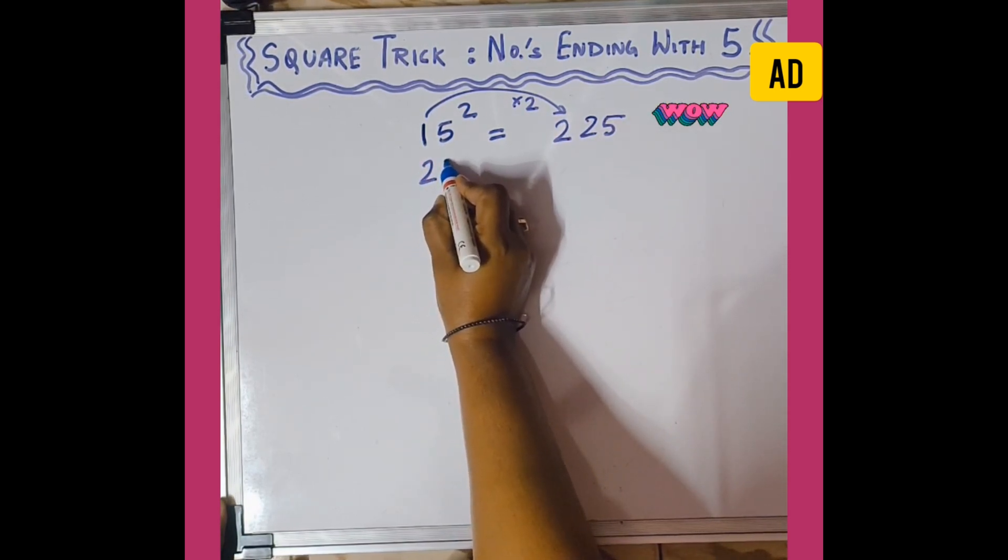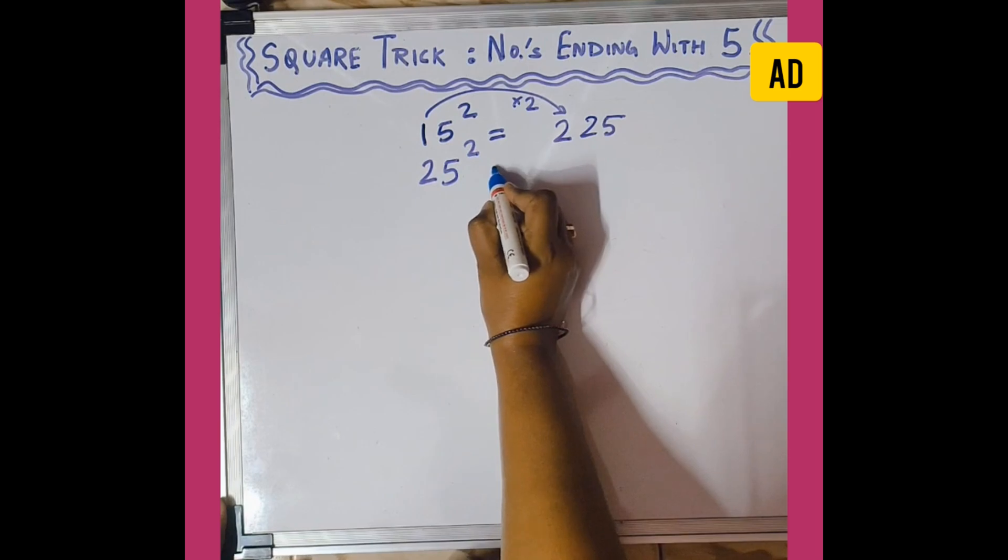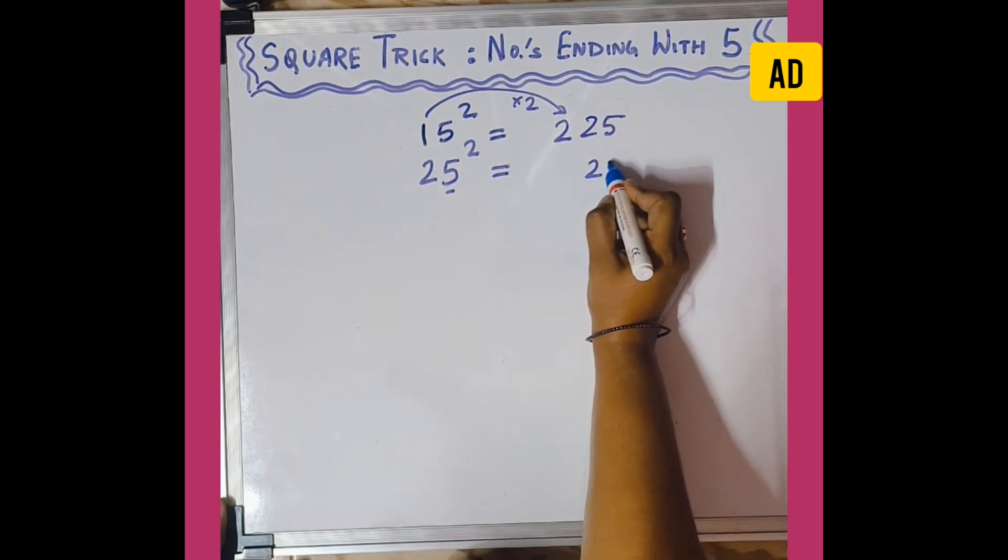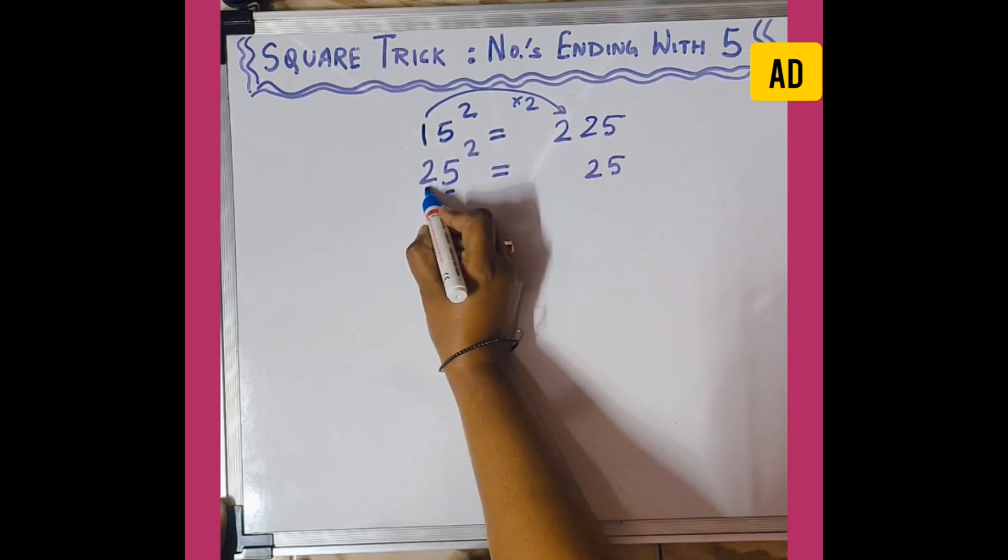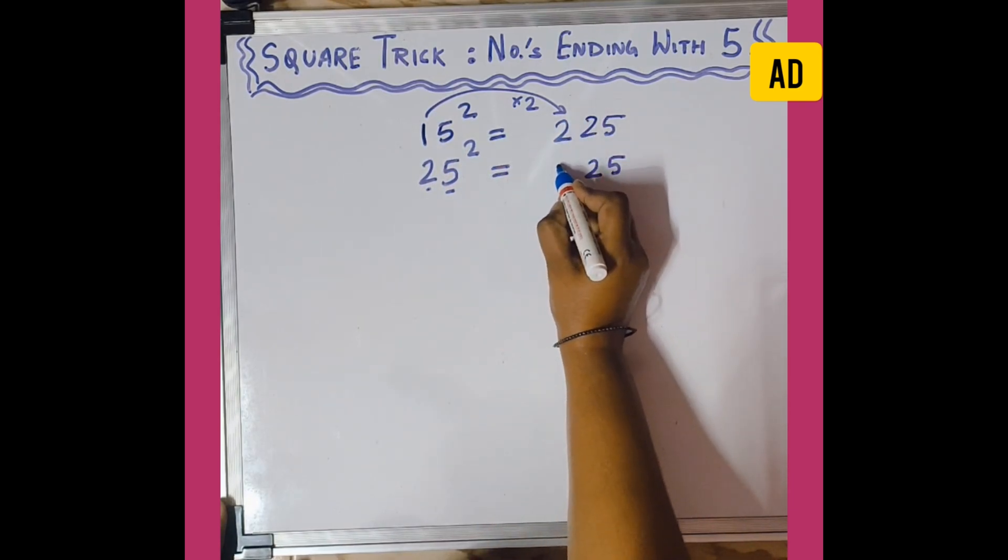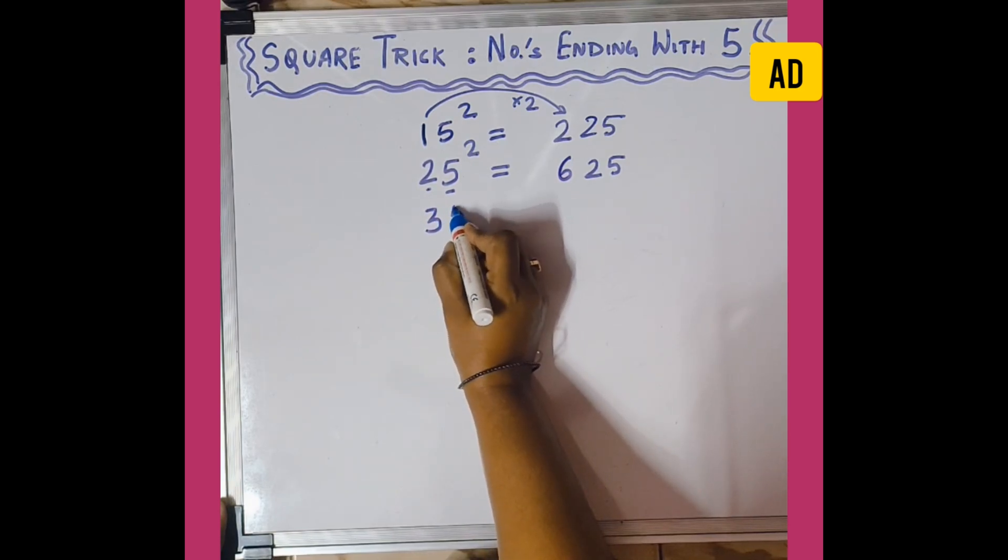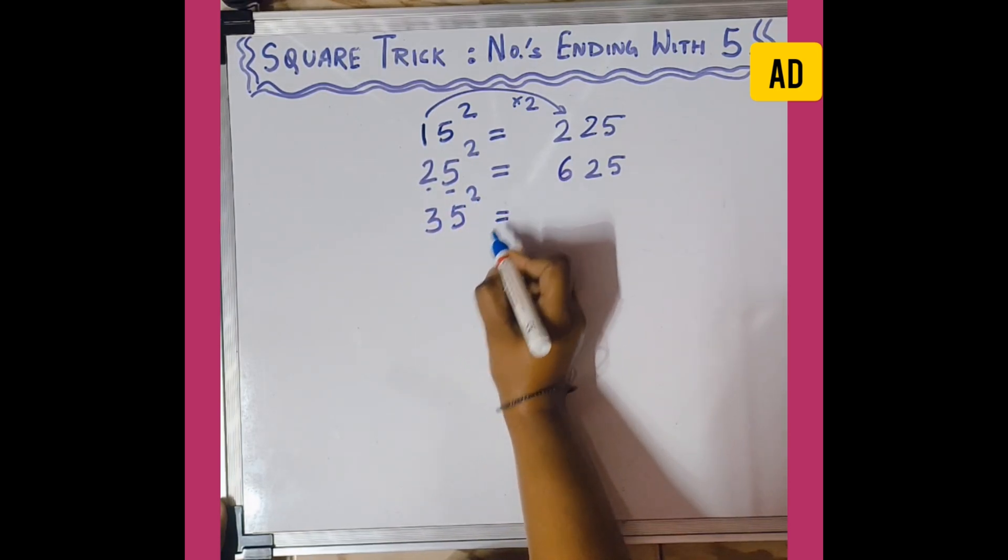Similarly, 25 squared: again 5 squared is 25 in the ones and tens place, and then 2 into 3 will be 6, so it is 625. Next is 35 squared: again 5 squared is 25, after that 3 times 4 is 12, so the answer is 1225.